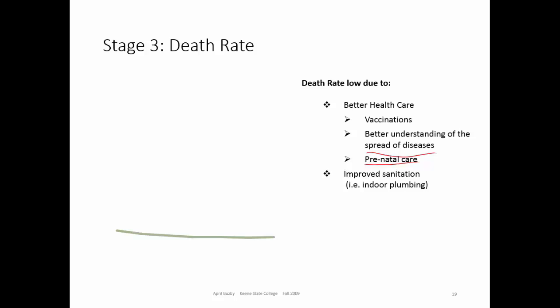Improved sanitation is the number one reason for an extended life — sanitation in food, in homes, and in personal hygiene. Improved quality and quantity of food: if the industrial and agricultural revolution did nothing else, they improved the quantity and quality of food, which was very bad in a pre-industrial society.